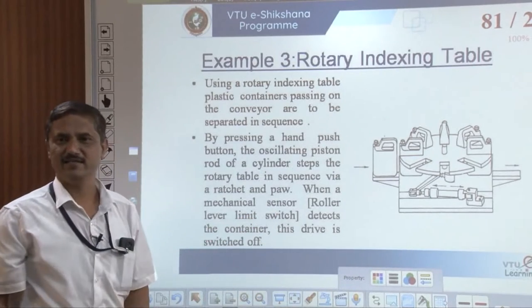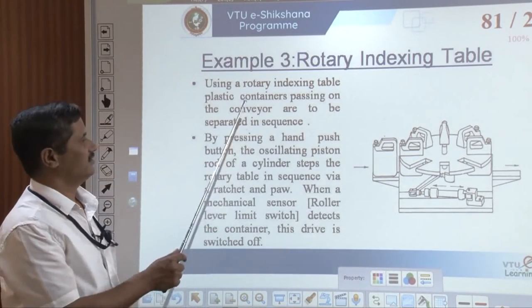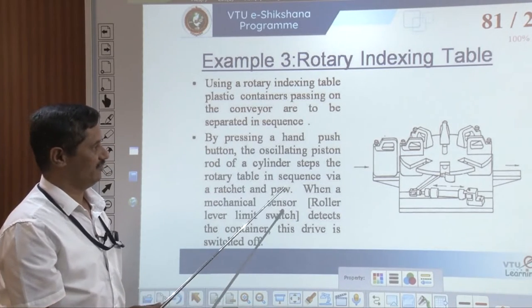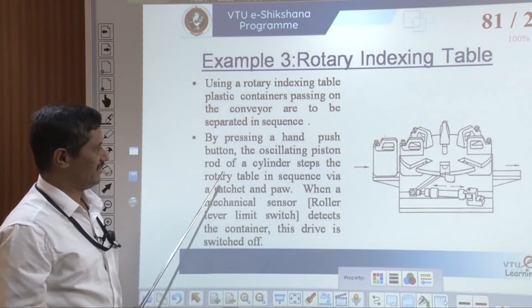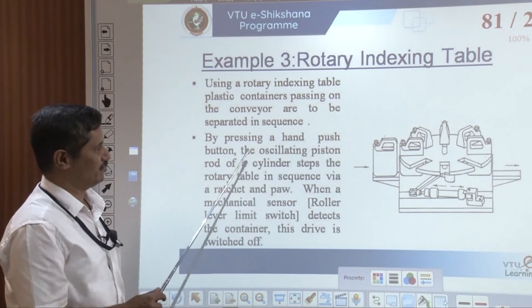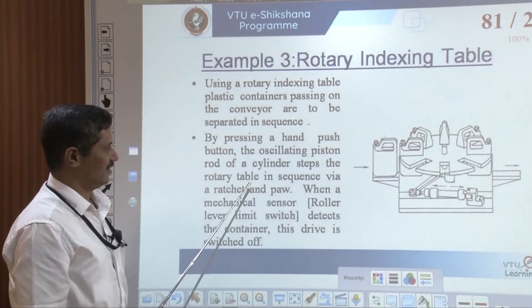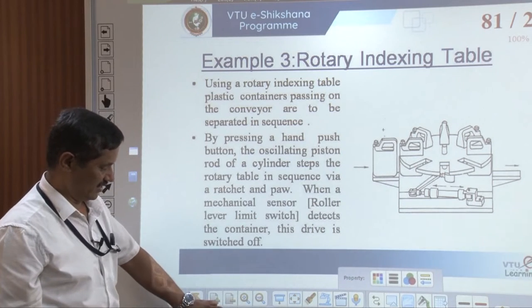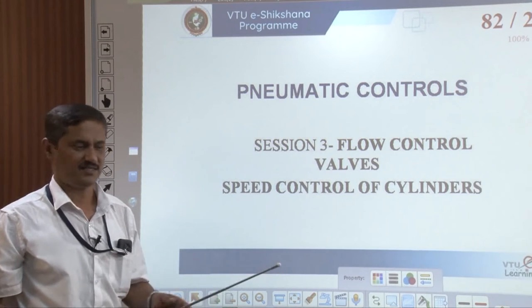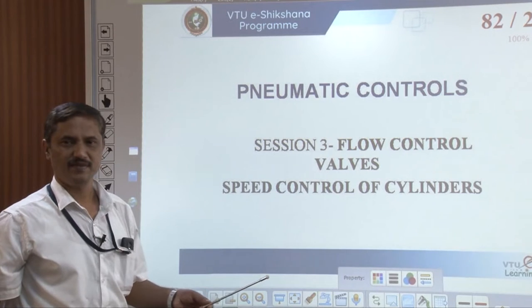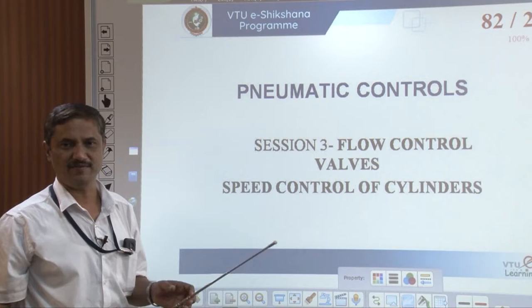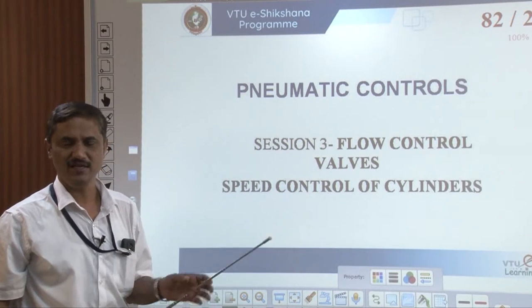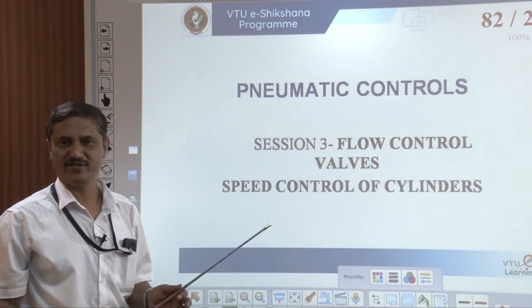For example, if you take a rotary indexing table as one more example: plastic containers passing on a conveyor are to be separated in a queue. We can have a machine where multiple sensors are used. By pressing a hand push button, the oscillating piston rod of a cylinder steps the rotary table. The rotary table will start rotating and one after the other the containers can be unloaded on the other side.